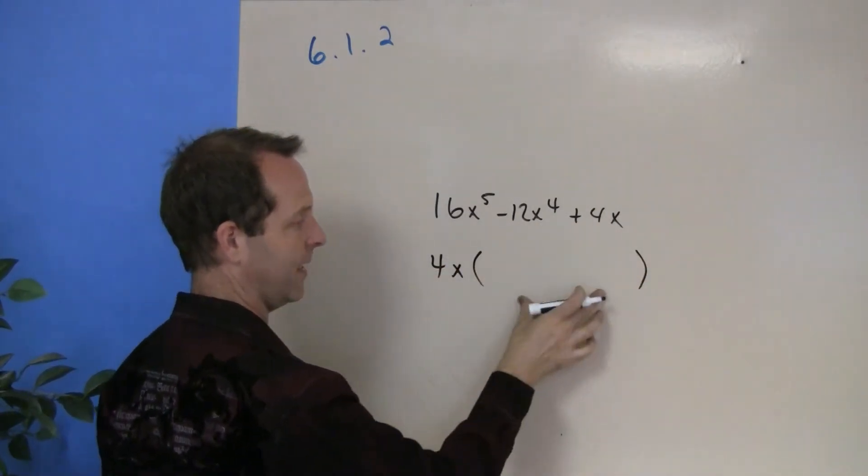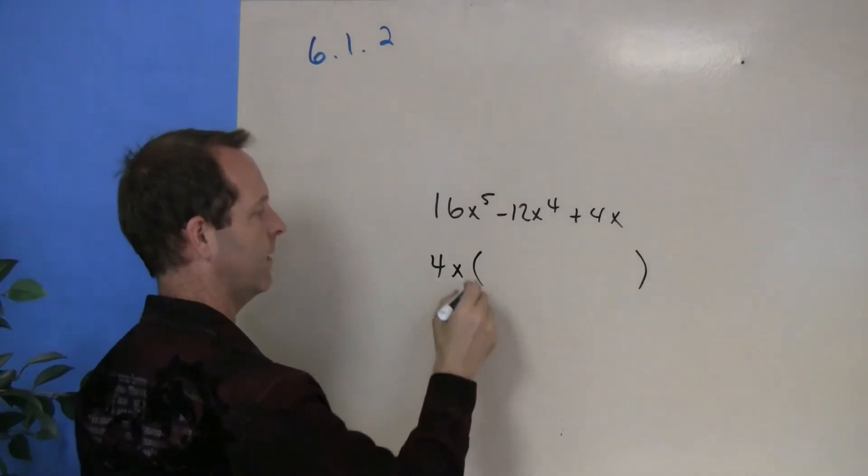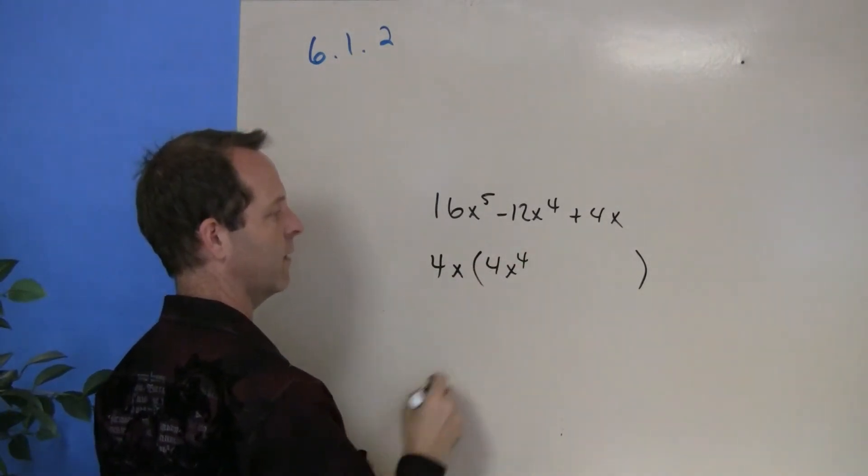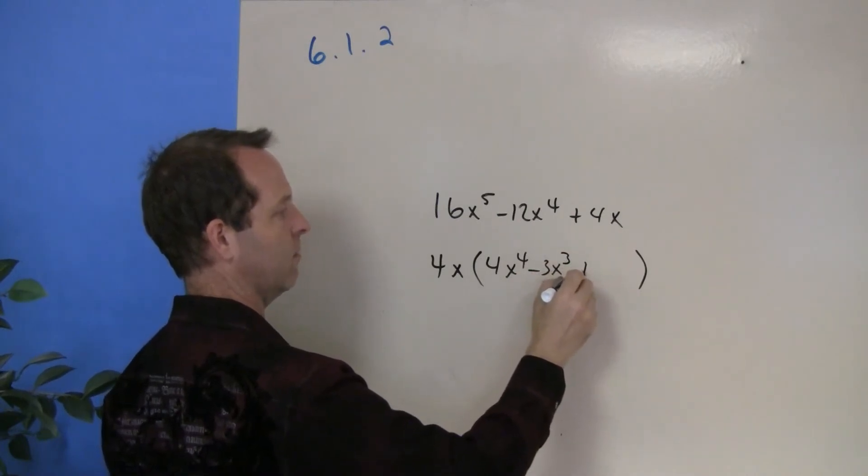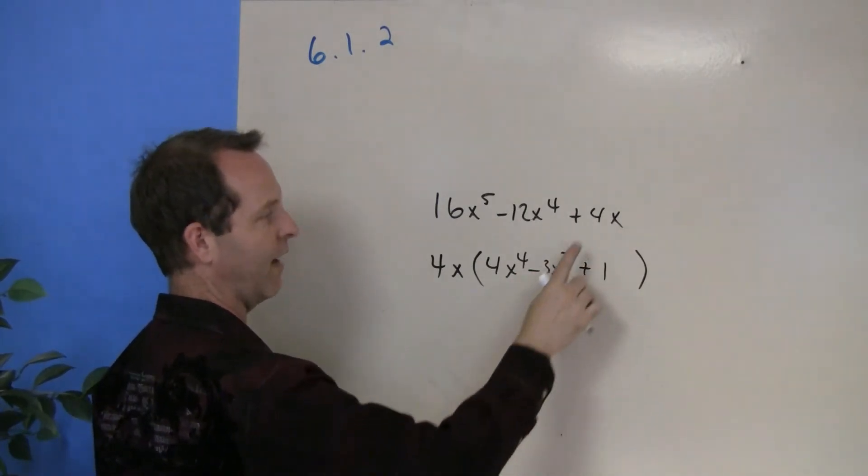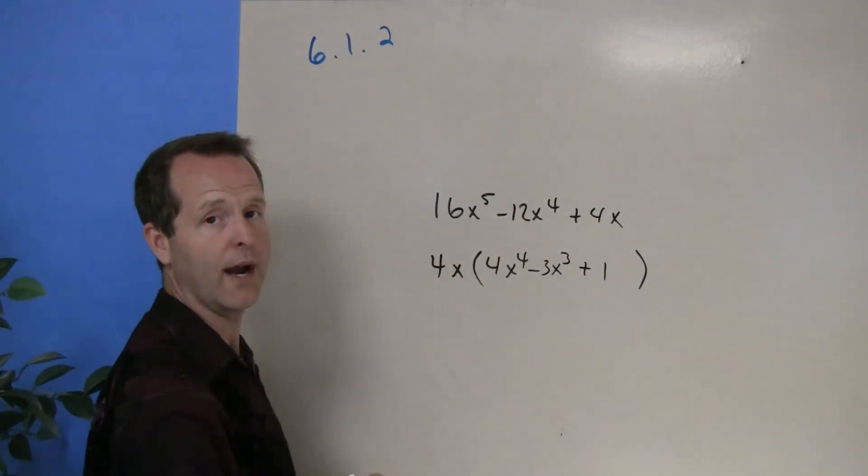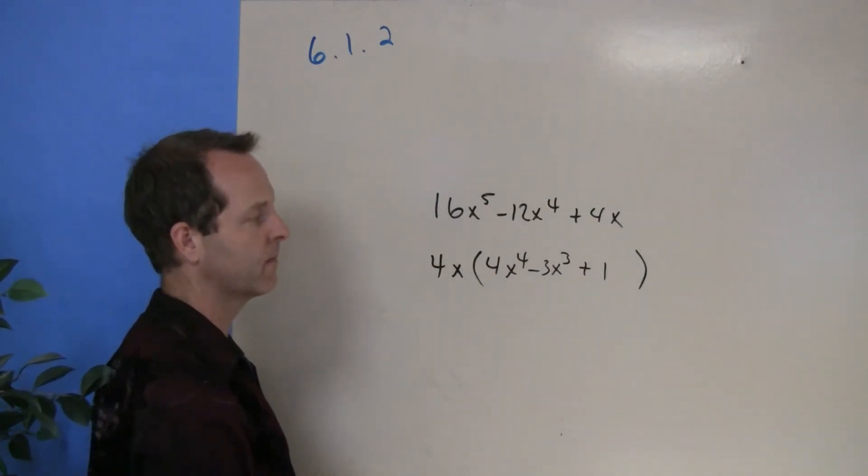And then what's left, again, I'm putting parenthesis around it. I'm left with 4x(4x⁴ - 3x³ + 1). I factor a 4x out of a 4x, what's left is a 1. And how do we know that?